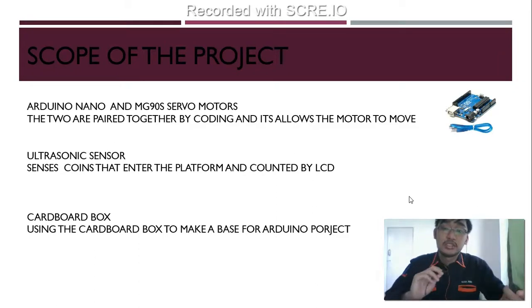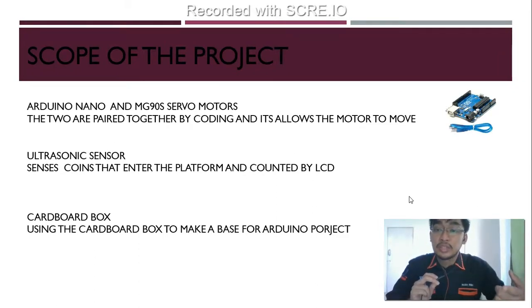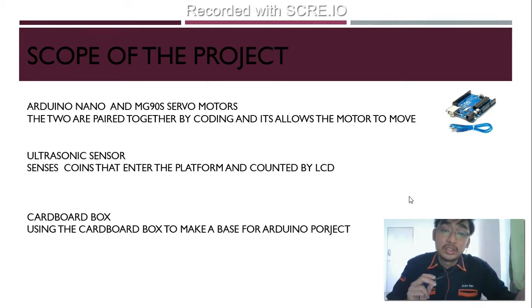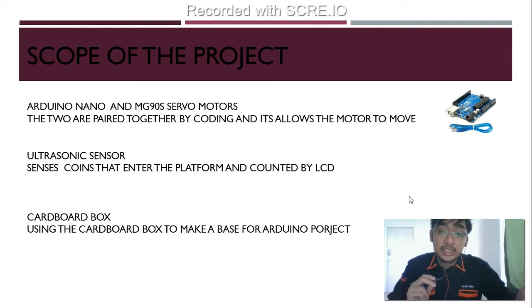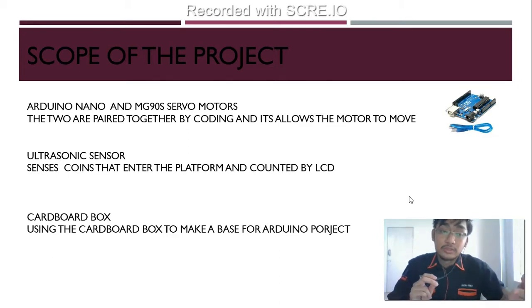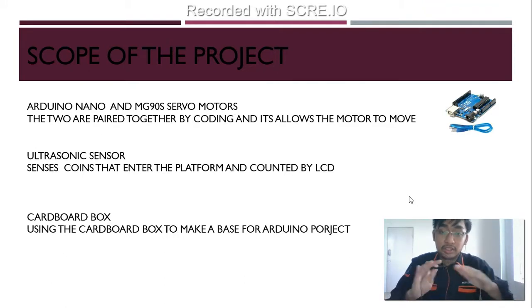For the scope of the project, I am using an Arduino Nano and MG90S servo motor. The two are paired together, allowing the motor to move. An ultrasonic sensor senses coins that enter the platform and the count is displayed on an LCD display. A cardboard box is used to make a base for the Arduino project.